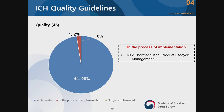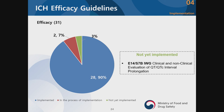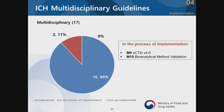In the quality sector, we have 46 quality-related guidelines, out of which 44 are implemented. Q12 lifecycle management is currently under discussion, so the guideline is in the process of implementation. For S1B rodent carcinogenicity studies in the safety sector, it is not yet implemented in Korea, but we are thinking about it. About 90% of safety-related ICH guidelines are implemented in Korea. For efficacy, 28 out of 31 guidelines are implemented. E14 is not yet implemented. For multidisciplinary guidelines, 16 out of 17 are implemented; M8 and M10 are in the process of implementation.